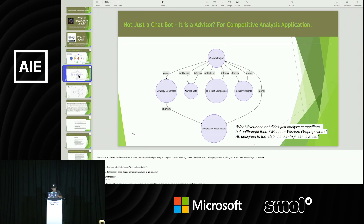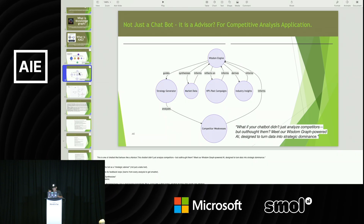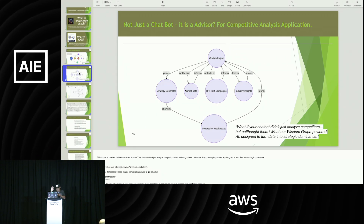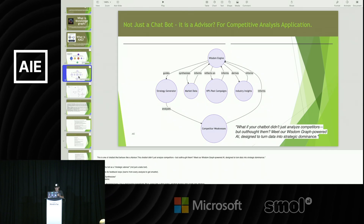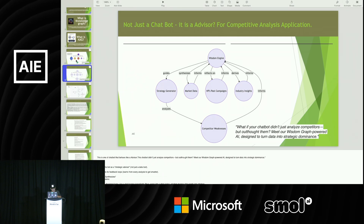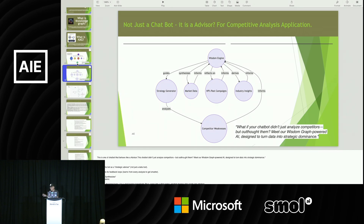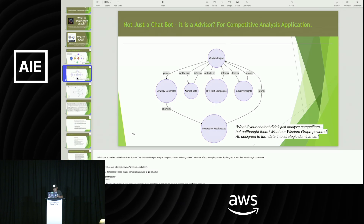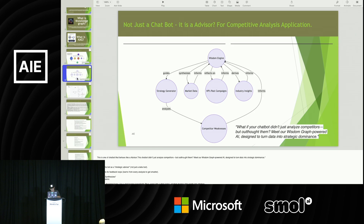For the decision-making, I mapped it to a strategy generator. These customers are talking about competitive analysis. For knowledge, they have market data. For experience, it maps to past campaigns — they have a lot of marketing campaigns. The insight is mapped to industry insights from their database. And the most important is the situation — how is my product selling? That gets mapped to competitor weakness. If you make the LLM aware of all that, you'll probably get a very good answer and the chatbot will advise correctly.